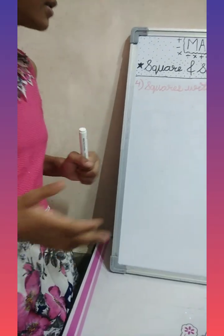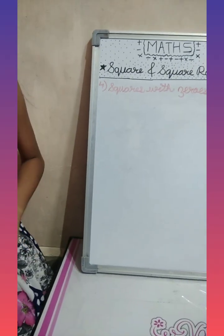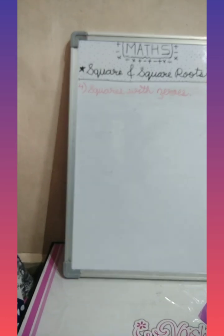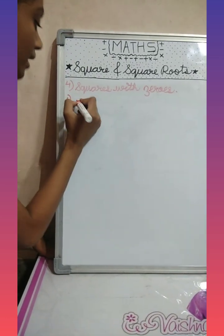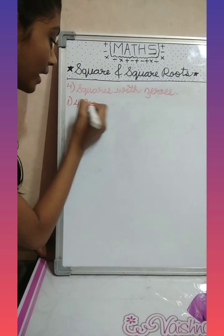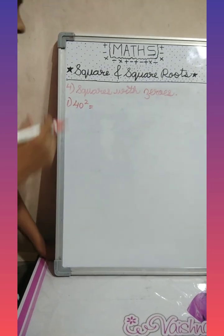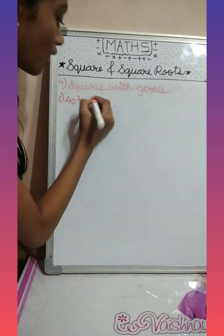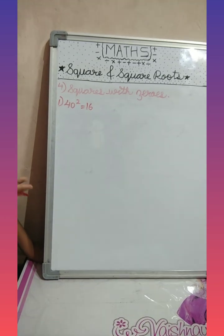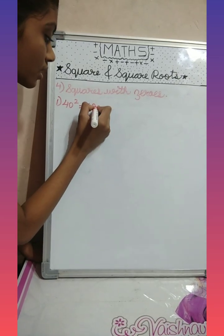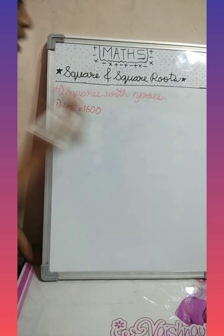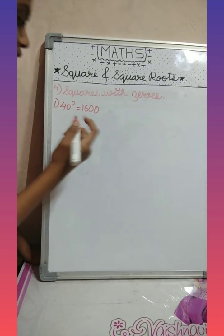So let's see the trick for finding out squares with zeros. First we will take the example forty square. First we will write down the square of four, it is sixteen. And we will double the number of zeros. If one zero is there, we will write two zeros.